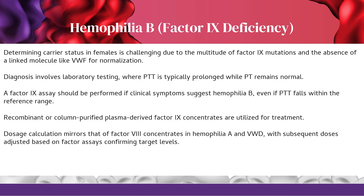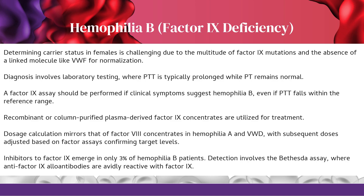Recombinant or column-purified plasma-derived factor 9 concentrates are utilized for treatment, with subsequent doses adjusted based on factor assays confirming target levels. Inhibitors to factor 9 emerge in only 3% of hemophilia B patients; detection involves the Bethesda assay, where anti-factor 9 alloantibodies are avidly reactive with factor 9.